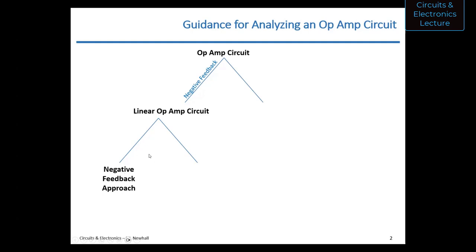Once you've analyzed a common circuit like an inverting amplifier or non-inverting amplifier, you know the gain and don't have to redo the negative feedback analysis. For example, the gain of an inverting amplifier is negative feedback resistor over the series input resistor. That's what I'm calling a common circuit. The right side of the tree is: what if you have no negative feedback? That circuit is going to be a comparator.